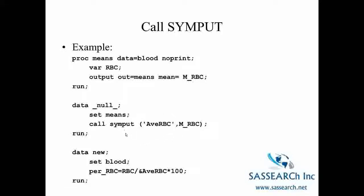Then we are going to create a new data set called DataNew. We are going to bring in our original data set blood. And we are going to calculate the percent red blood cell count which is equal to RBC divided by, and here is where we are using our global macro variable AvRBC. Because it is a macro variable we start with an ampersand and then we are multiplying it times 100. So we have calculated the ratio of red blood cells for an individual to the average red blood cells of all the observations in our data set times 100.